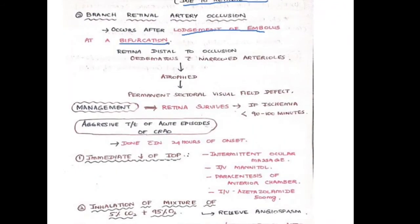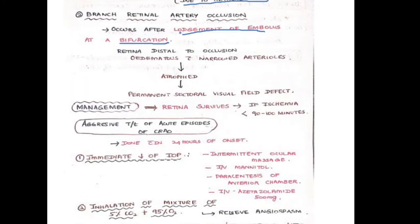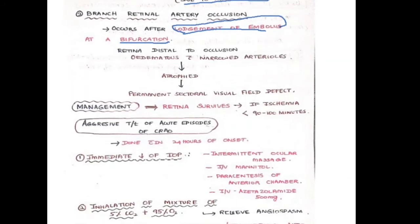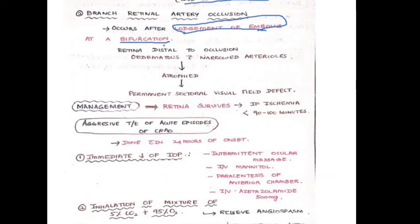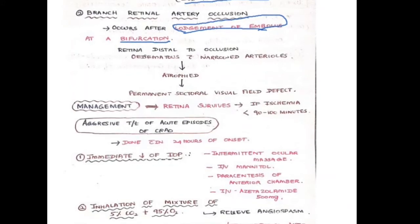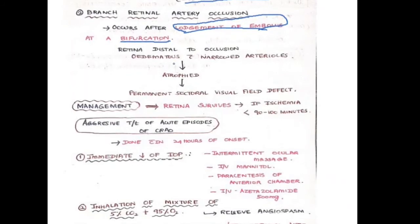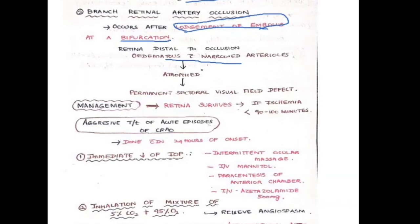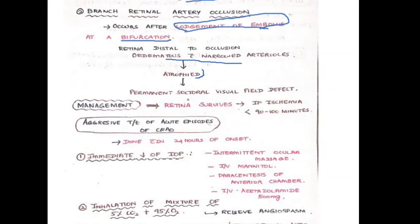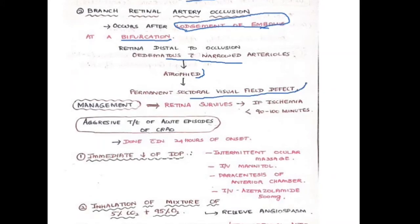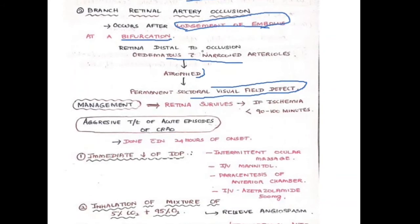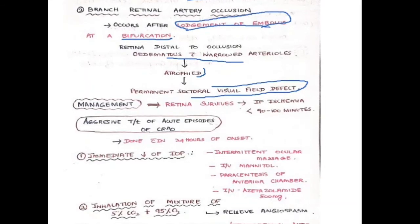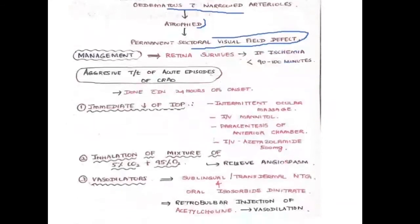Branch retinal artery occlusion occurs due to lodgement of an embolus at the arterial bifurcation — especially cholesterol emboli, which are large. The retina distal to the occlusion becomes edematous with narrowed arterioles, then undergoes atrophy, leading to a permanent sectoral visual field defect.